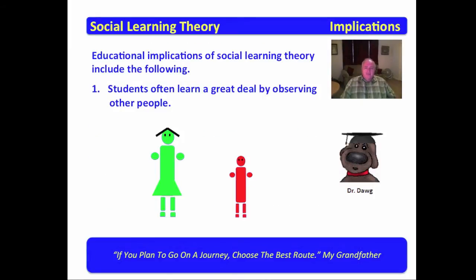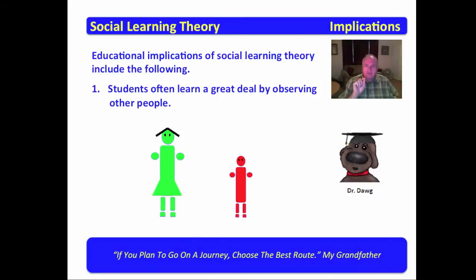We're going to examine some of the educational implications of social learning theory. The first is that students often learn a great deal by observing other people. When I say other people, I want you to understand it's not just teachers. Students observe their peers, other adults, their parents, television characters, athletes, and a myriad of others. If you really recognize the power of observation, then you will recall the concept of getting their attention — get them focused on observing those that model the appropriate behaviors.